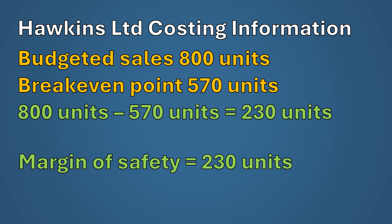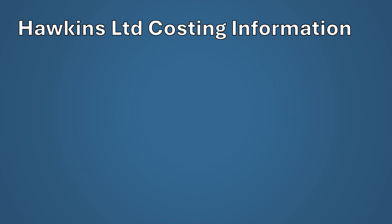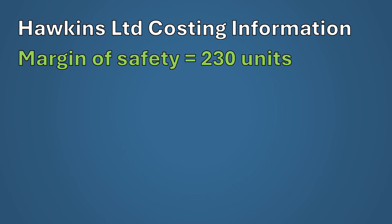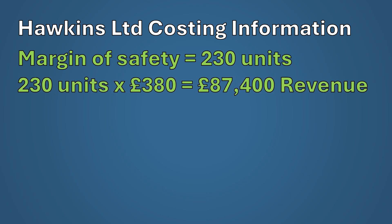To convert the margin of safety to a sales revenue figure, multiply the margin of safety in units by the selling price per unit: 230 units multiplied by £380 equals £87,400. This means the business could lose up to £87,400 in revenue from its budgeted figures before it becomes unprofitable.